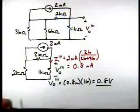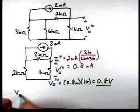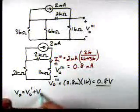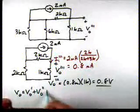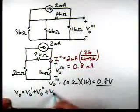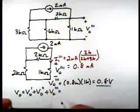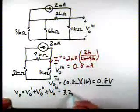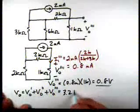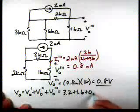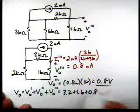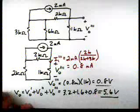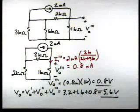So now V0 equals V0 prime plus V0 double prime plus V0 triple prime: 3.2 plus 1.6 plus 0.8 gives us 5.6 volts for V0.